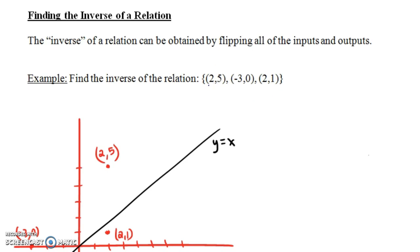We have a relation here. Notice it's not a function, because the input 2 gives you an output of 5, but it also gives you an output of 1. So this is not actually a function, but it is a relation.